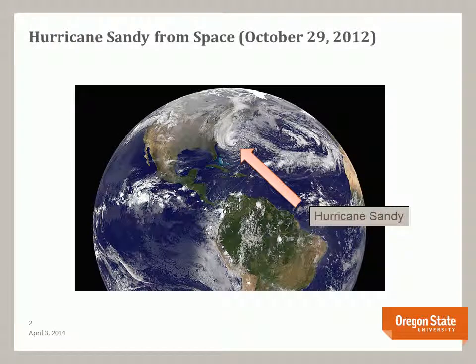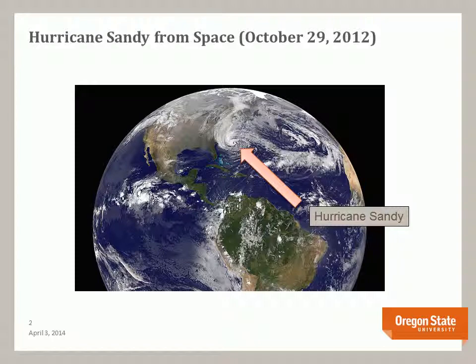I'd like to talk first about the models, and I'm going to frame this short discussion on Hurricane Sandy, which occurred in October of 2012. This is a global picture of Hurricane Sandy — the United States or North America, South America — and here is Hurricane Sandy, which was a real monster of a storm. It formed to such a large extent because of some very special meteorological or atmospheric processes that were occurring at the time.